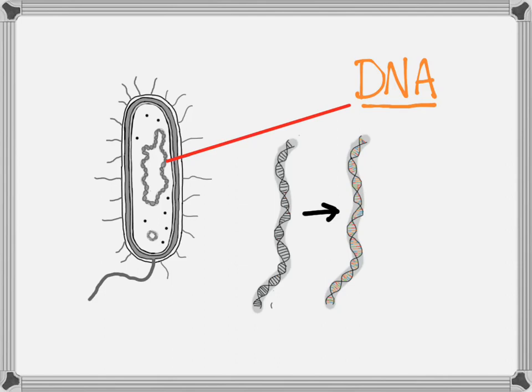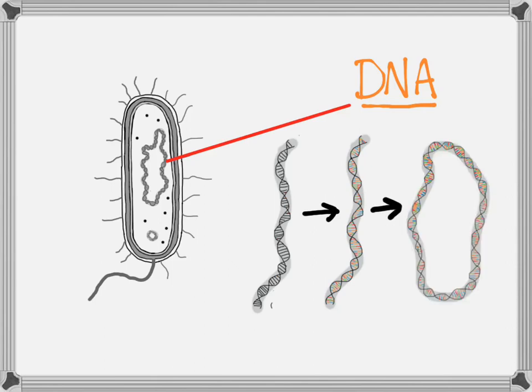Those chemical pieces only fit together in a very particular way, and that's what makes up the rung of the ladder. In bacteria, that long ladder molecule has been twisted into a circle — like a little DNA bracelet.